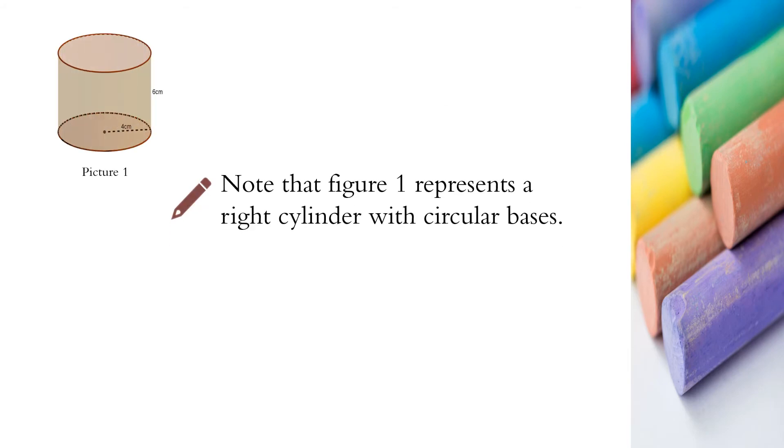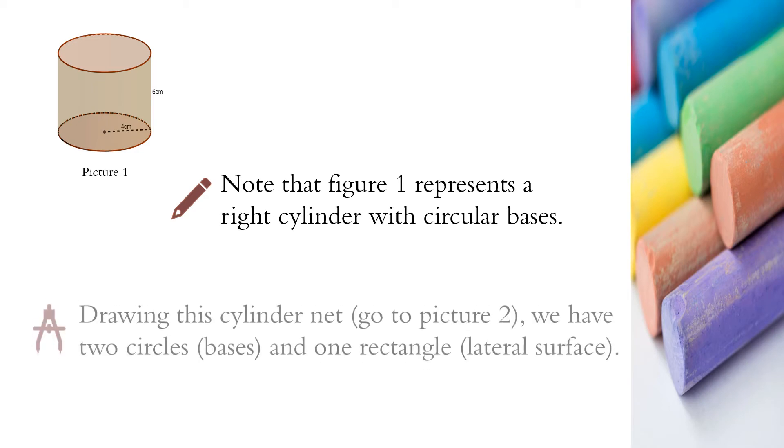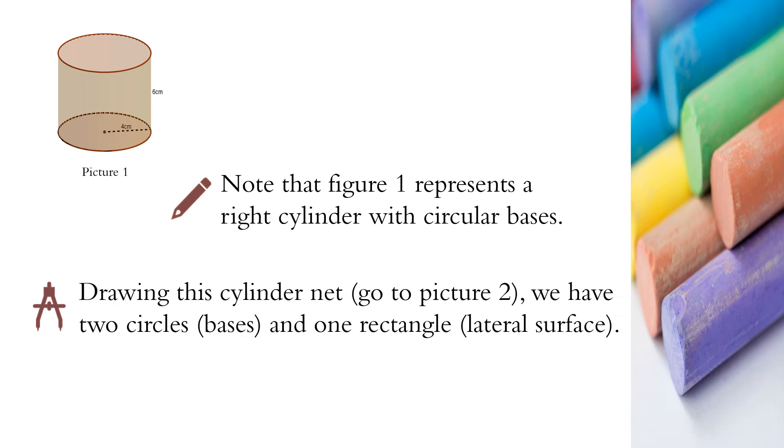Note that picture 1 represents a right cylinder with circular bases. Drawing this cylinder net, go to picture 2. We have two circles that are the bases and one rectangle lateral surface.